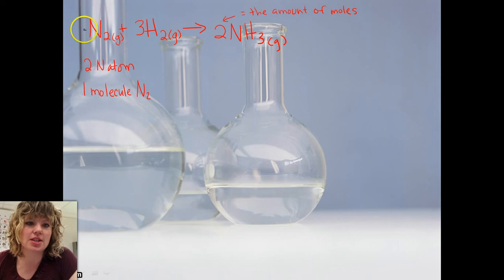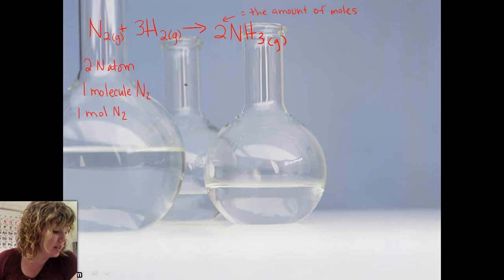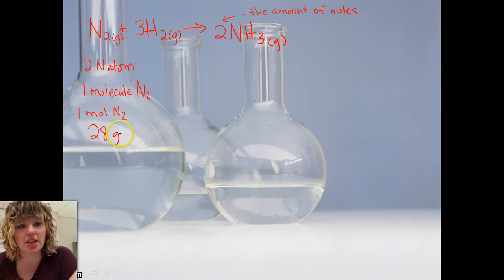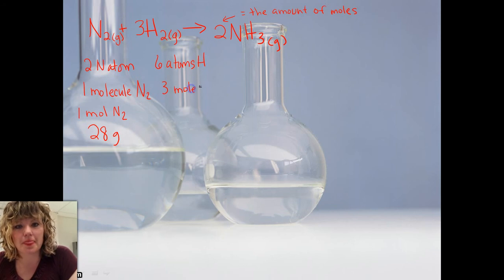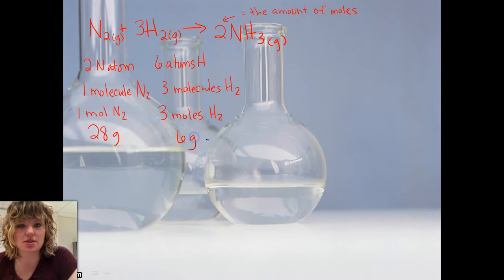So here, since there is nothing, we just have one mole of N2, and we know that we have around 28 grams of N2 here. Now, this one, we have 3 times 2, so we have 6 atoms of hydrogen, and we have 3 molecules. Because that 3 out in front means molecules, and now it also means moles of H2. So we have 3 moles of H2, and there's going to be about 6 grams in this one.